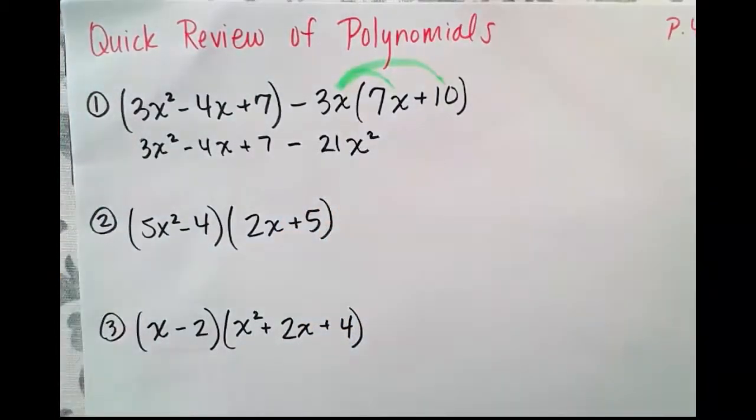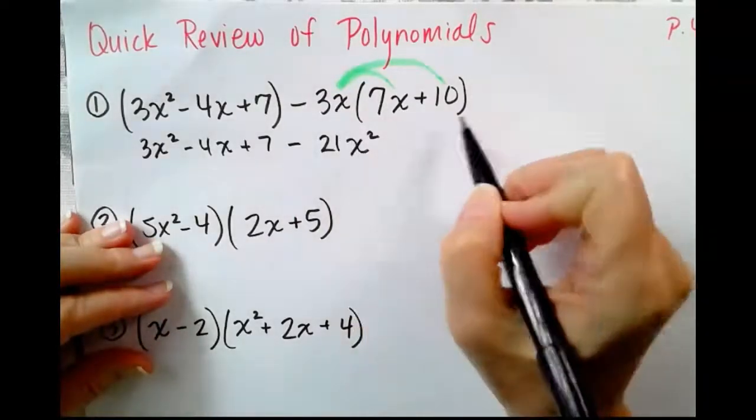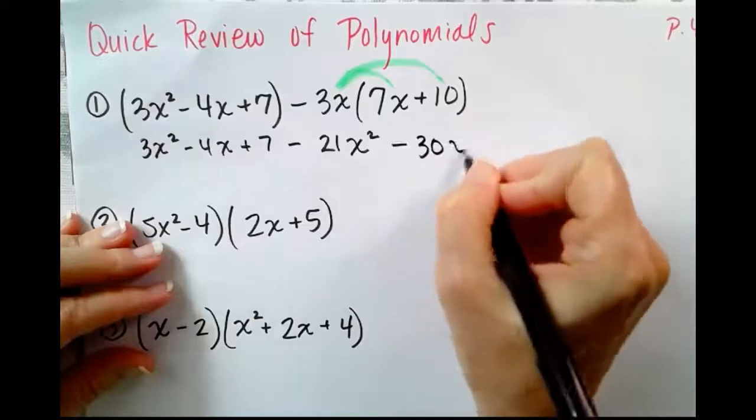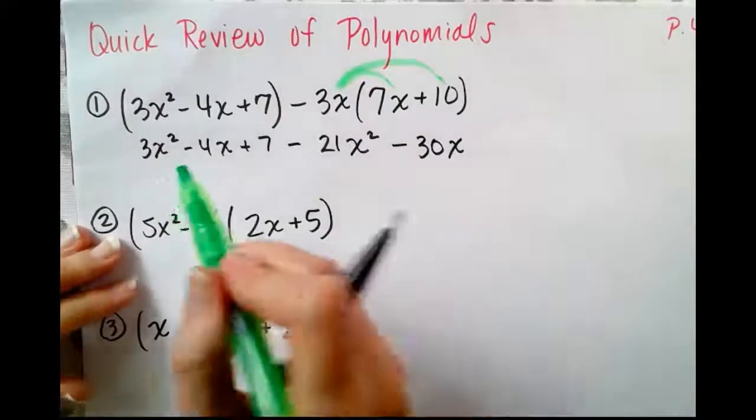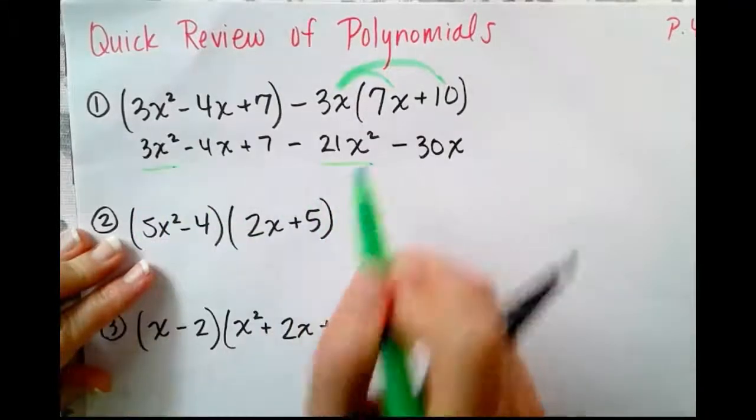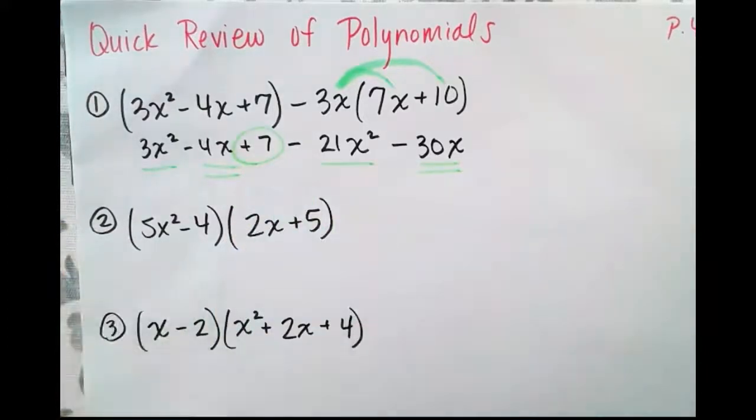Remember, we're multiplying, and the bases are the same. Add those exponents. Negative 3x times 10, negative 30x. Now we're going to find the like terms and combine them and put our simplified answer in descending order, which is standard form.